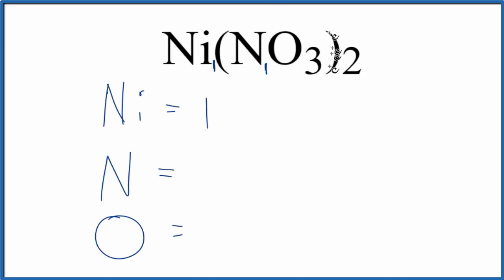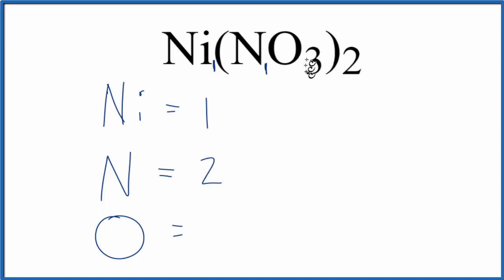But everything here in parentheses, we multiply by the subscript two. So we have two times the one, that gives us two nitrogen atoms. Two times the three, that gives us six oxygen atoms.